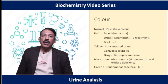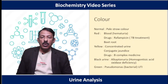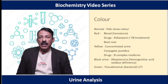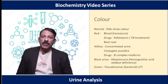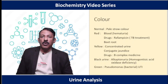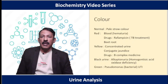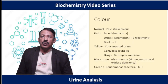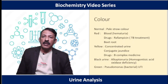Drugs like B complex are also known to darken urine to dark yellow. Black color urine is seen classically in a condition called alkaptonuria, a disease associated with homogentisic acid oxidase deficiency — the urine on standing progressively becomes darker. Green color urine is rarely seen in urinary tract infection caused by the bacteria Pseudomonas, which produces a green color pigment that colors the urine.